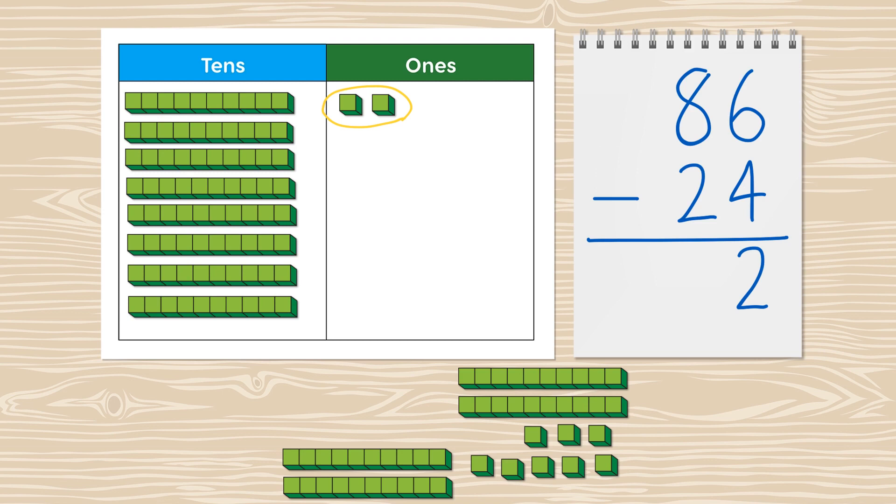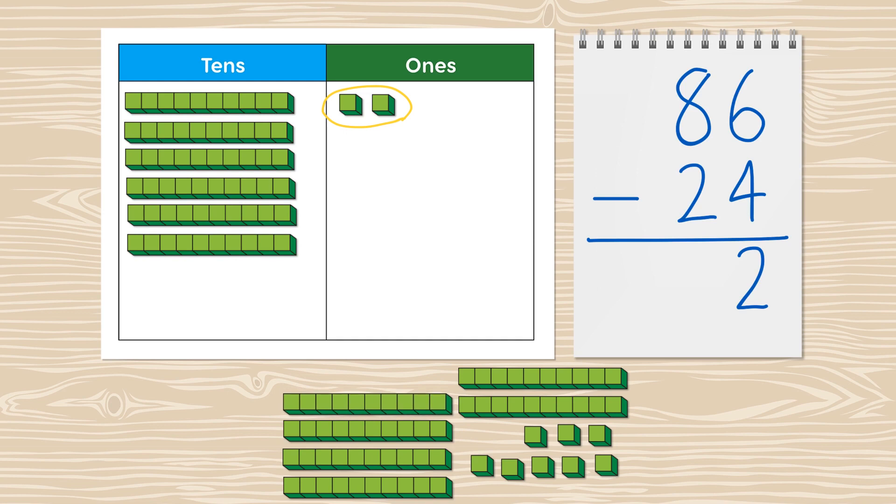move on to the tens. Let's take away two tens: one, two. There are six tens remaining. Write six in the tens column. We're all done, so 86 minus 24 equals 62. In the next video we'll use bar models to help us subtract.